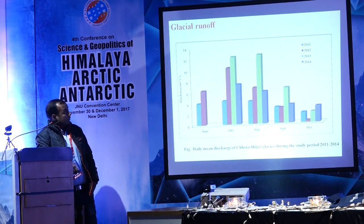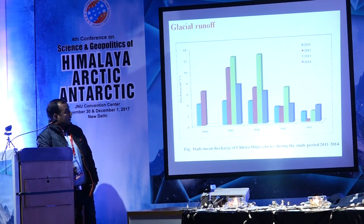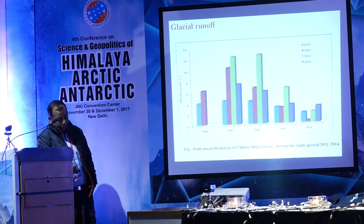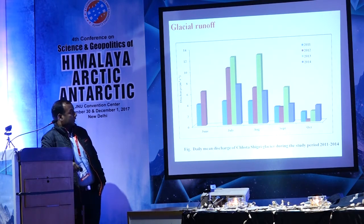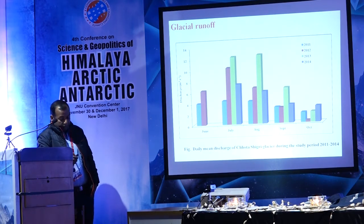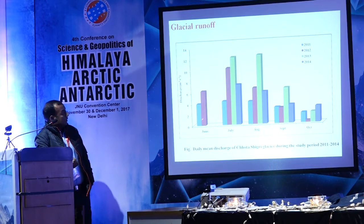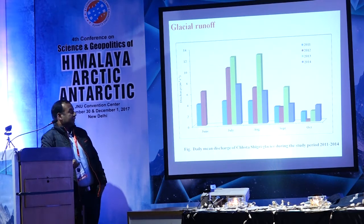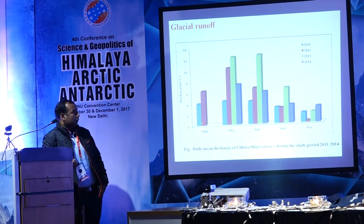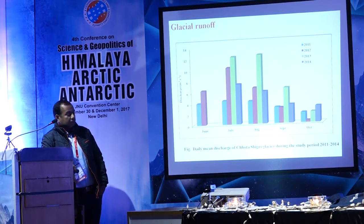This diagram shows the distribution of glacier runoff during different months in the Chhota Sigiri Glacier. From this bar diagram it is clear that the melt water runoff shows an increasing trend from June onward, reaching a maximum value in July and August, after which it shows a declining trend.